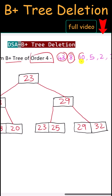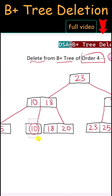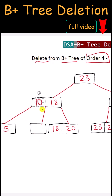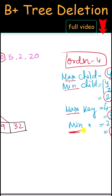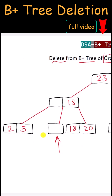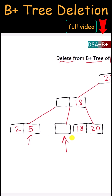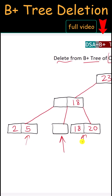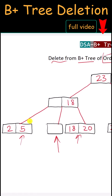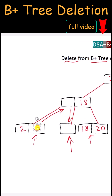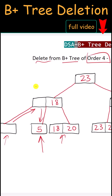Next we delete 10. We delete it from the leaf and also from the internal node. Now this node cannot be empty — we must have a minimum of one key. We can borrow from the left or right child since both have more than the minimum number of keys. So we borrow from the left child through the parent node. 5 will be borrowed through this parent, and the internal node will then have the minimum value from the right child, which is 5.